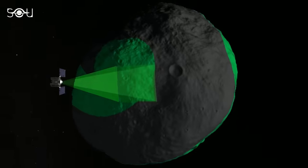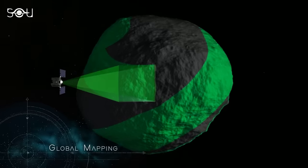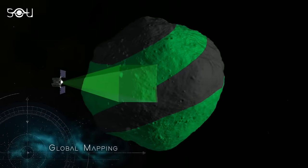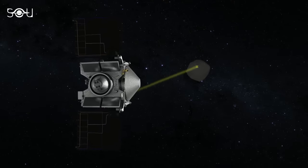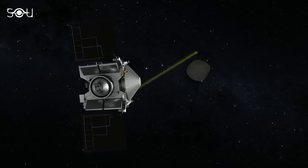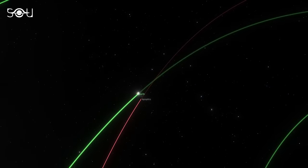Over 1.5 years, OSIRIS-APEX will extensively map the asteroid's surface. This will allow mission scientists to examine any notable changes brought about by Apophis's brief interaction with Earth's gravitational influence.